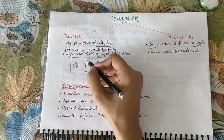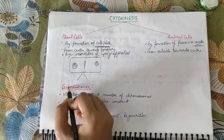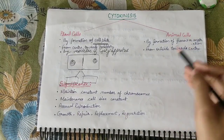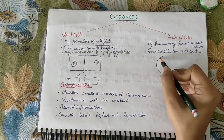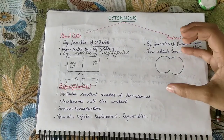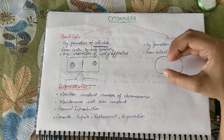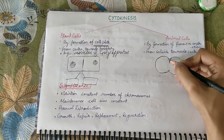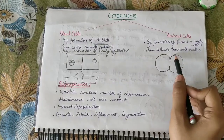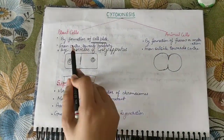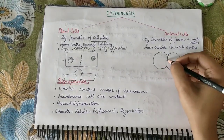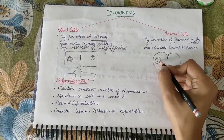When the cell plate is complete, it divides the cell into two daughter cells. In animal cells, a furrow or constriction forms from outside toward the center — centripetal — similar to pressing a piece of barfi from the sides until it splits. This is how two daughter cells are formed in animal cells.